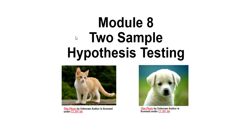Hello, this is a video covering module 8: two-sample hypothesis testing. Previously we looked at only one population mean or one population proportion and ran a hypothesis test to determine its value. Now we're going to look at two population proportions and compare them, and we'll also look at two population means and compare them.